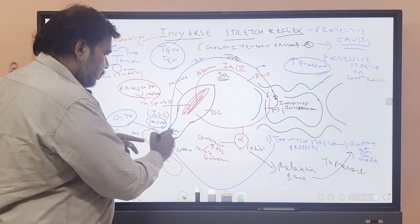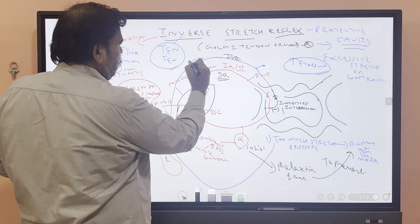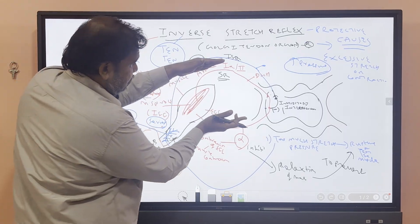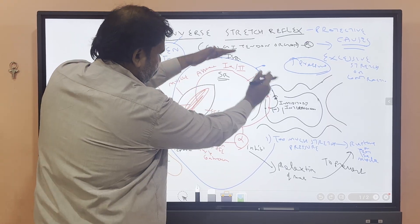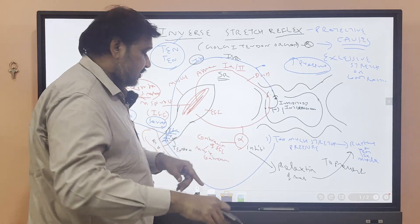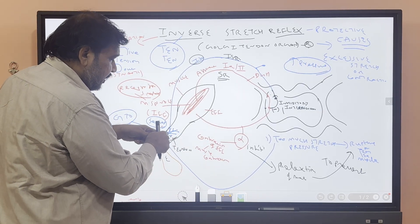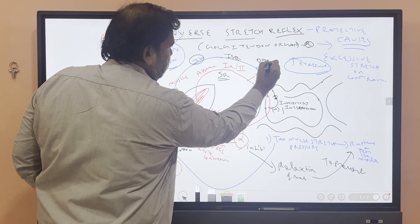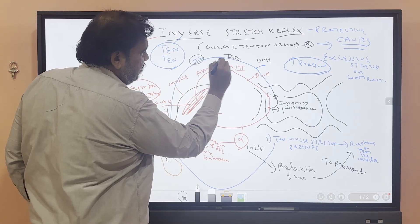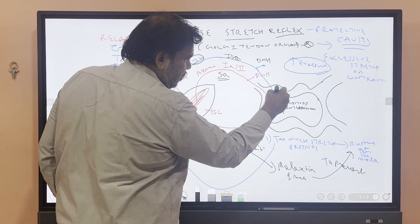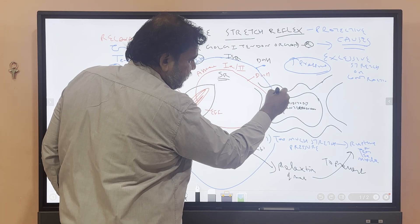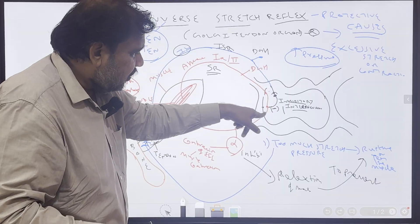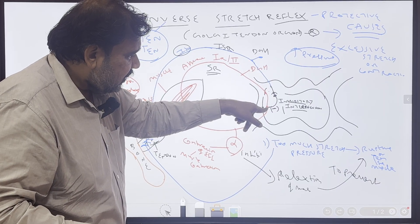The Golgi tendon organ fires and the afferent from it is 1B — please note that down. The 1B fibers travel via the dorsal grey horn into the spinal cord and synapse with an inhibitory interneuron. That inhibitory interneuron then inhibits the alpha motor neuron.